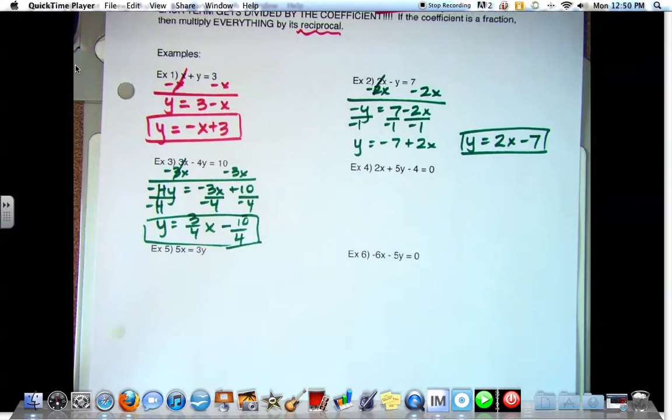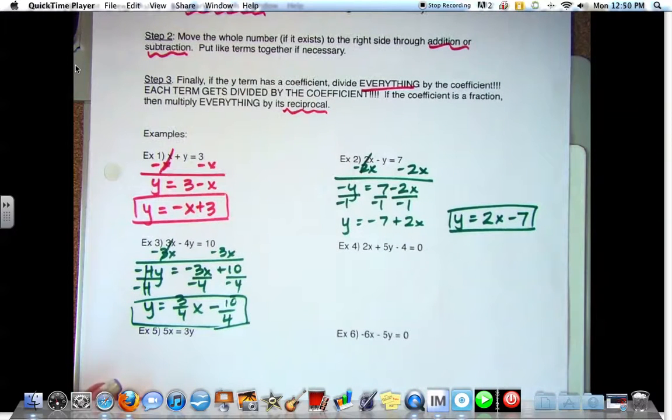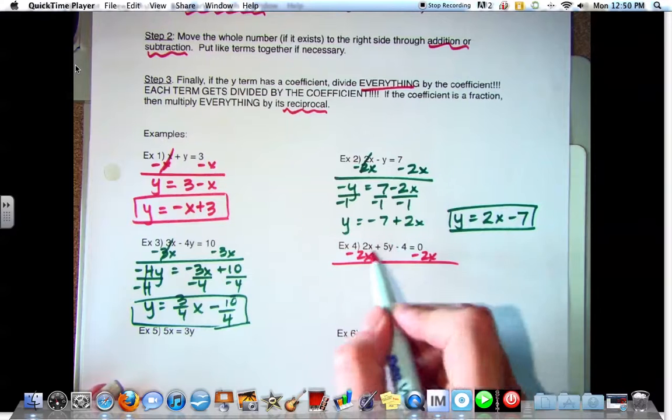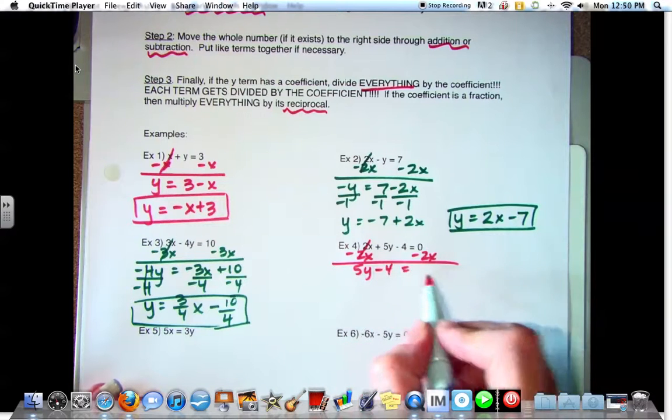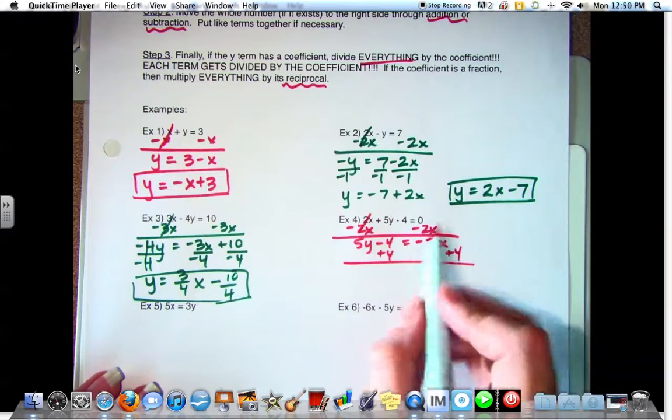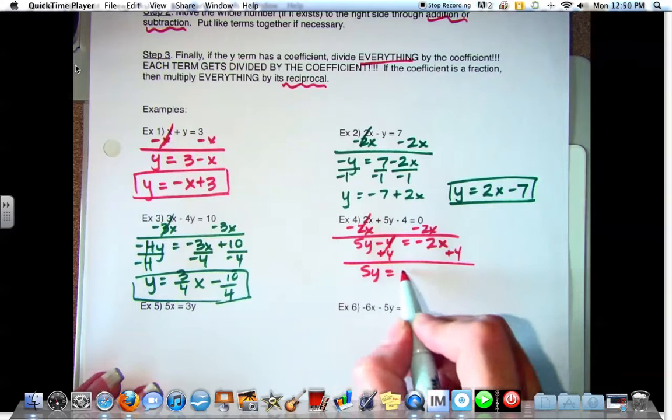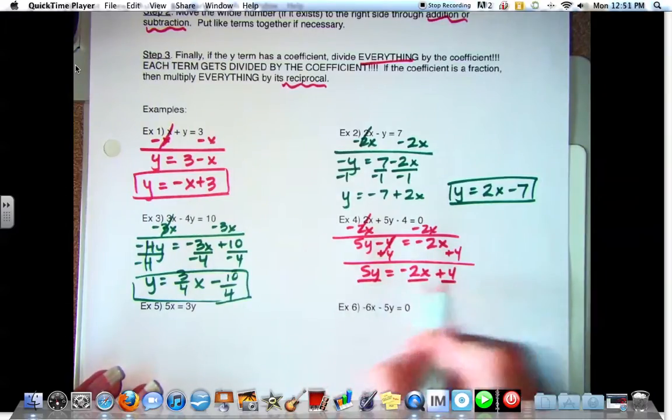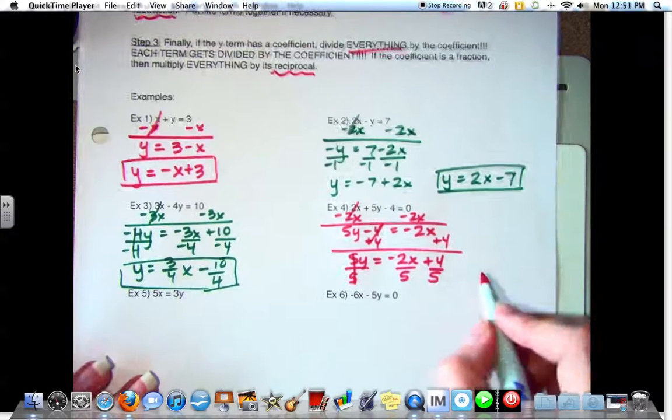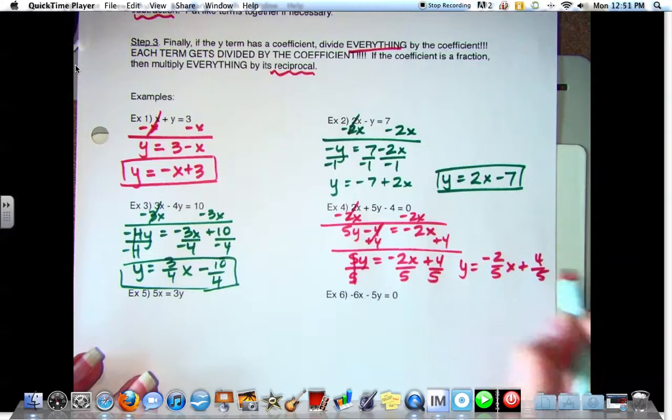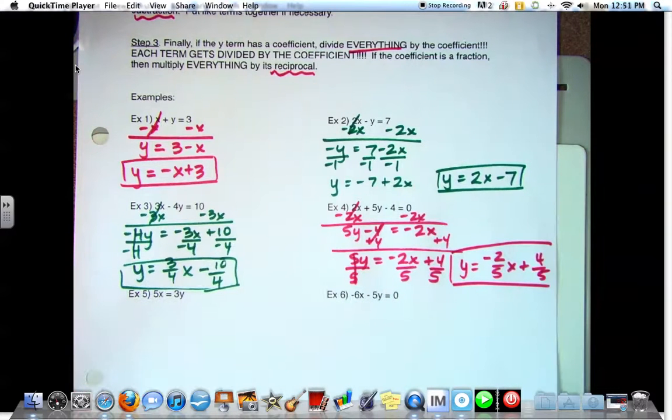All right, example four. Two X plus five Y minus four equals zero. Subtract two X. So what do I have remaining on the left-hand side? Five Y minus four. Very good. Equals negative two X. Okay, now what do you want to move? Four, add four. So what do we have on the left side? Five Y equals negative two X plus four. Now what do we need to do? Divide everything by five. So we have Y equals negative two-fifths X plus four-fifths. And we're done.